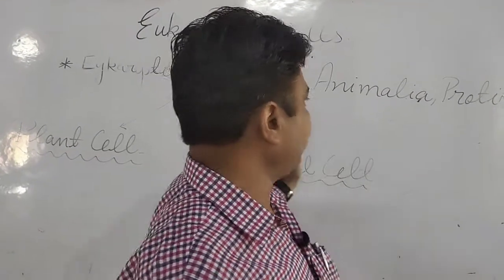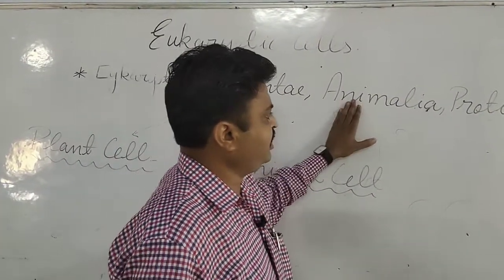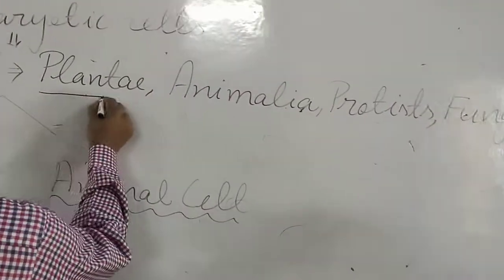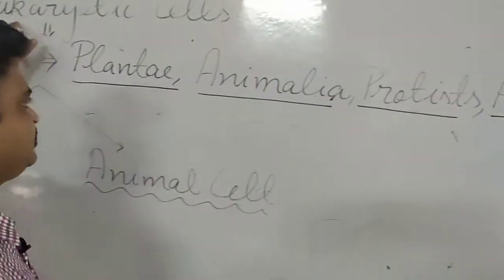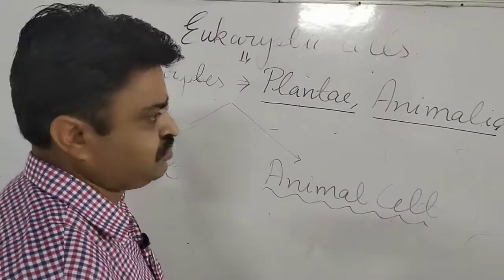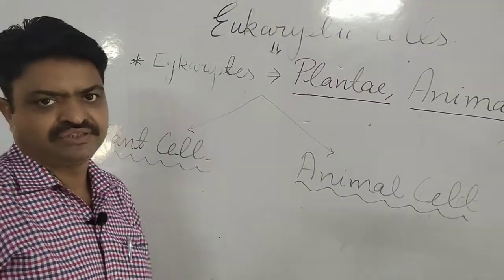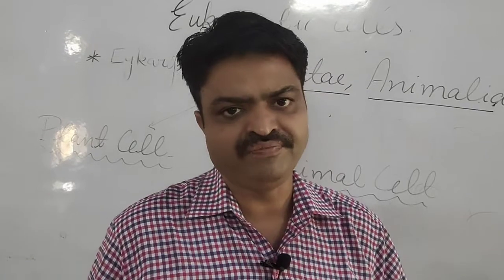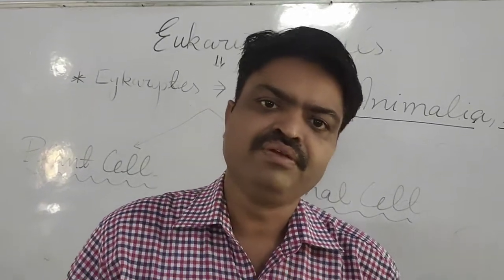We can categorize eukaryotes according to their kingdom: plantae, animalia, protists, and fungi. These are the groups of living organisms that have the eukaryotic cell and are known as eukaryotes. The main feature of the eukaryotic cell is that they have a definite nucleus, which is the control center of the cell.